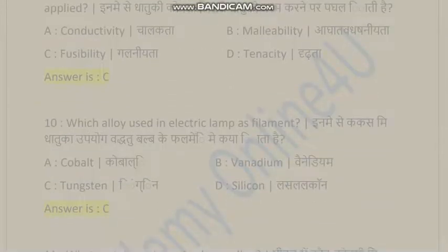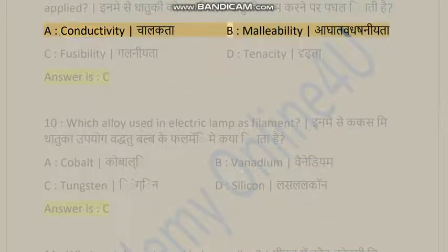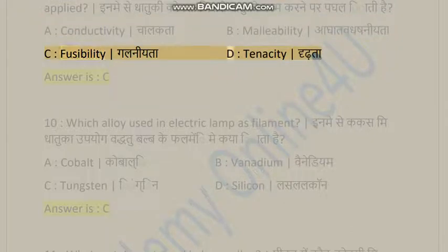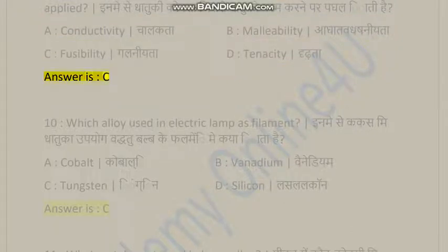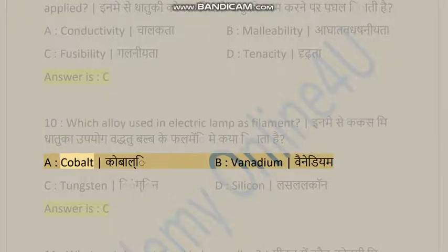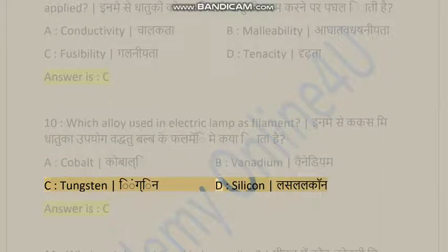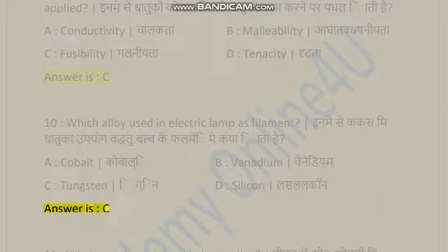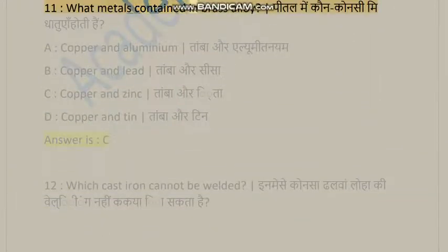Question 9: Which property of a metal causes it to melt when heat is applied? A) Conductivity, B) Malleability, C) Fusibility, D) Tenacity. Answer is C. Question 10: Which alloy is used in an electric lamp as a filament? A) Cobalt, B) Vanadium, C) Tungsten, D) Silicon. Answer is C.